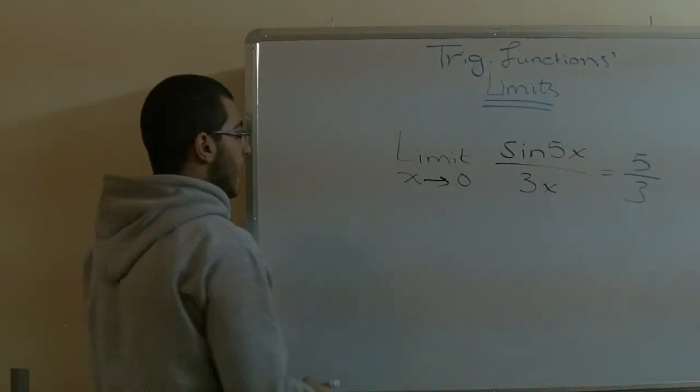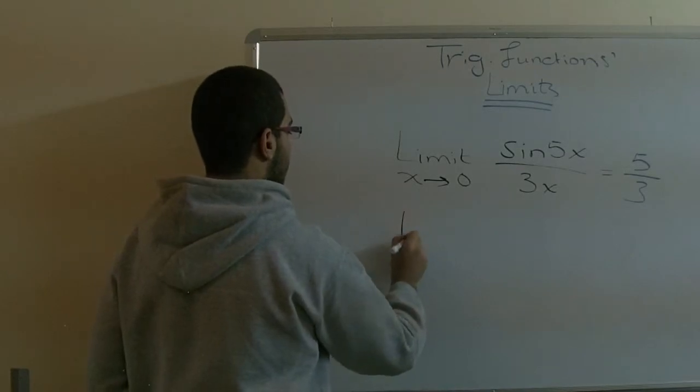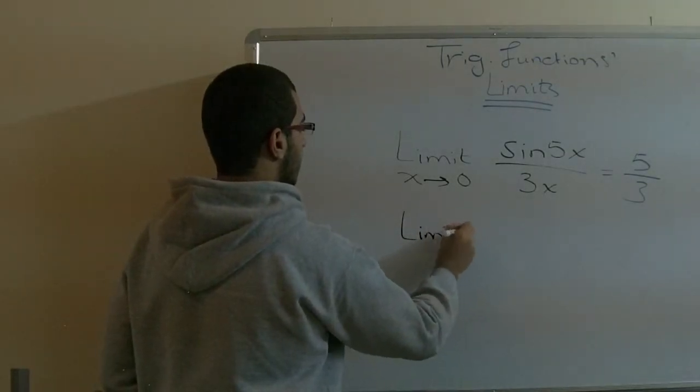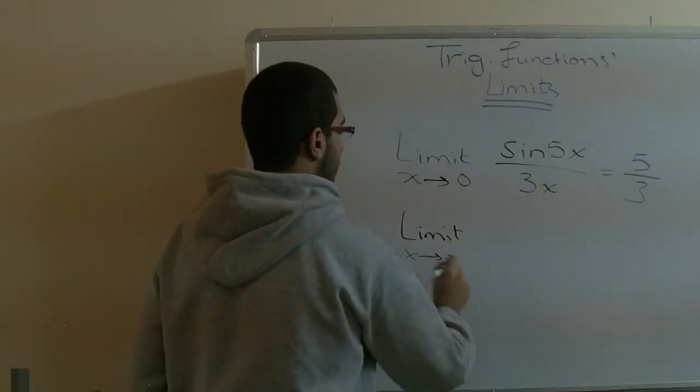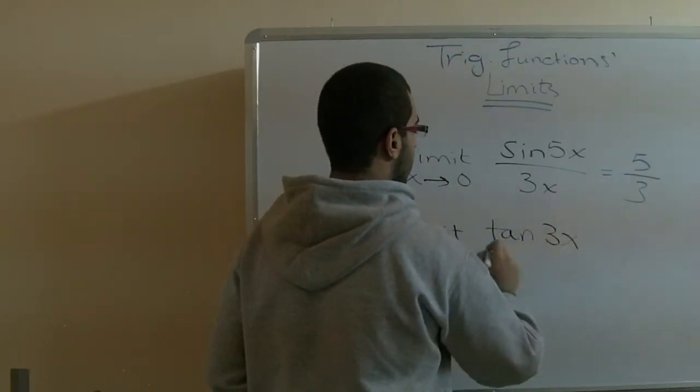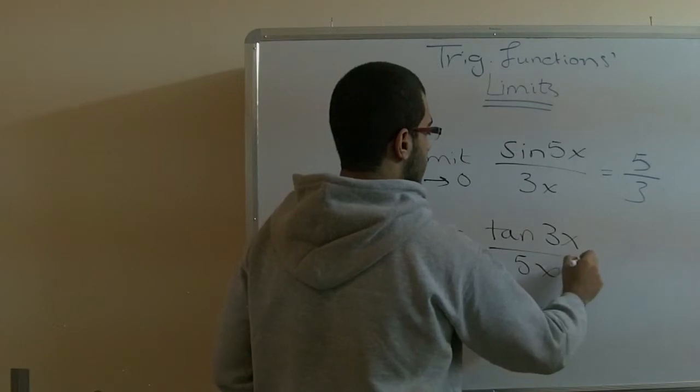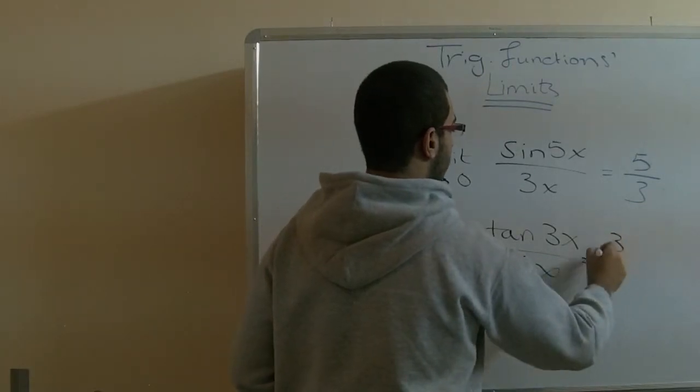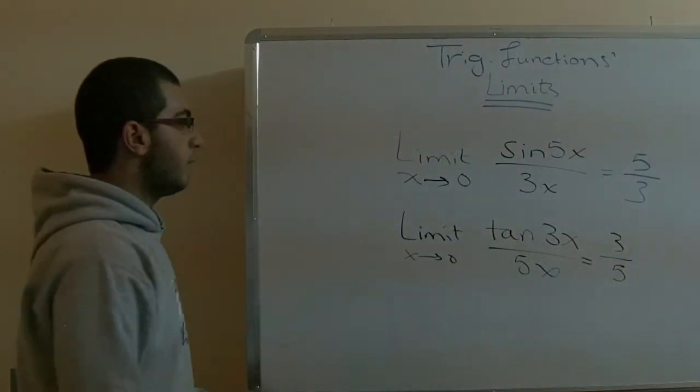If we have the limit of x approaching zero, tan 3x over 5x, the answer will be 3 over 5. So this is very simple.